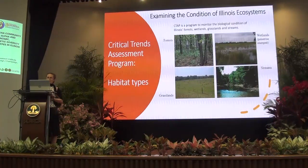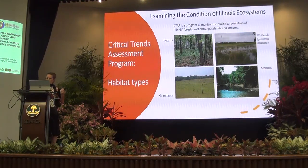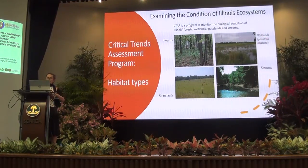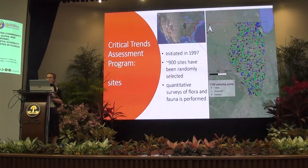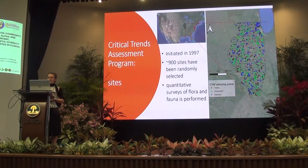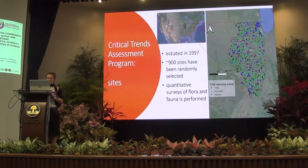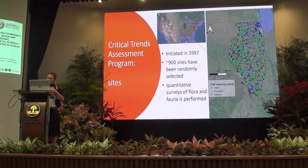The Critical Trends Assessment Program is meant to monitor these changes over a long time. They are collecting data for 30 years now and mainly focus on four habitats: forest, wetland, grassland, and streams. Basically, they initiated the project in 1997. They selected about 900 sites that were chosen randomly, and they carried out quantitative surveys on the flora and fauna.